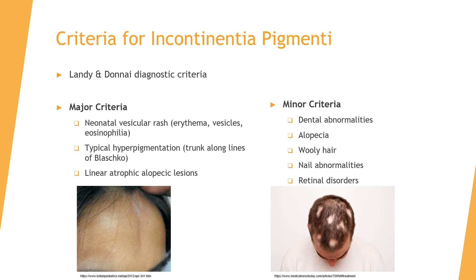We use the Landi and Donne diagnostic criteria when diagnosing incontinentia pigmenti. The major criteria is composed of neonatal vesicular rash, which can include erythema, vesicles, and on lab results, eosinophilia. You would also see a pattern of hyperpigmentation along the lines of Blaschko at the trunk, as well as linear atrophic alopecia lesions.